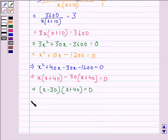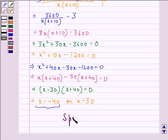This implies x is equal to minus 40 or x is equal to 30. But speed cannot be negative so we neglect x equals to minus 40. Therefore our answer to this question is that the usual speed is 30 km per hour.